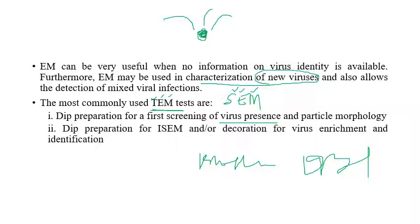The most commonly used transmission electron microscopic tests include detection of virus presence and particle morphology — whether it is rod-shaped, spherical, or icosahedral. ISEM — immunosorbent electron microscopy — as mentioned earlier, is used for detecting anti-sera production, virus enrichment, and identification of plant viruses.